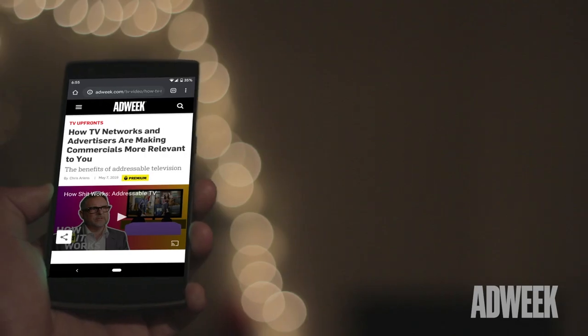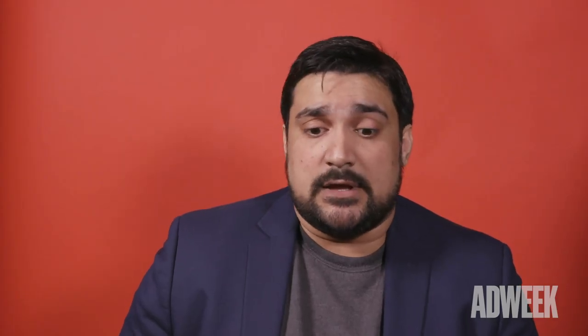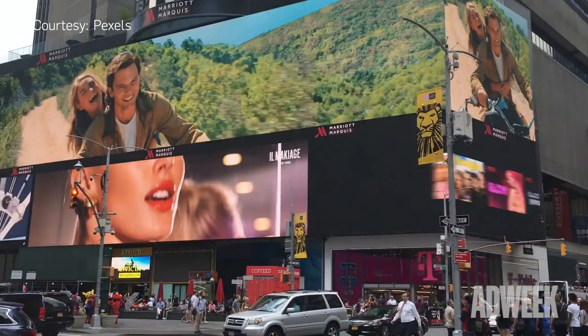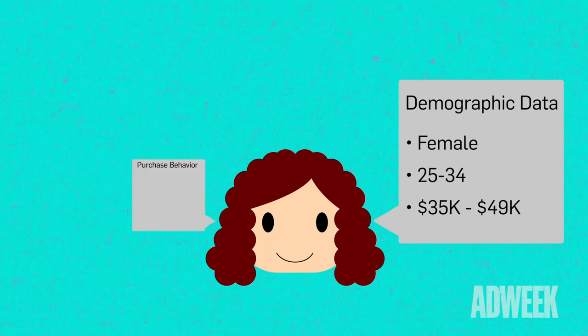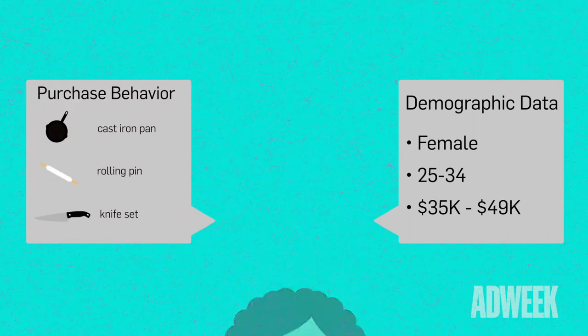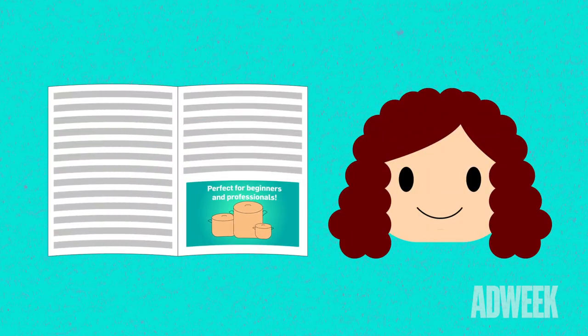It can be applied to digital channels like mobile and desktop display, to things like over-the-top, connected TV, or digital out-of-home. But in reality, it can be applied to print as well. We've worked with publishers where we have demographic and purchase behavior data on subscribers, and we've been able to marry that together to make the ad in a print magazine more relevant. You really have to treat addressable creative as omnichannel and audience-first.